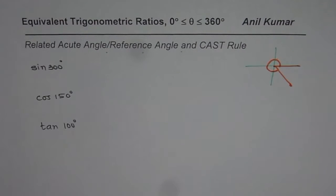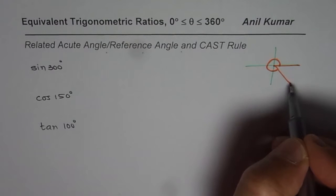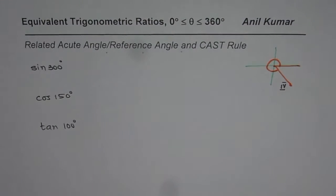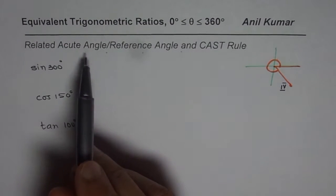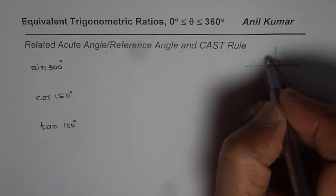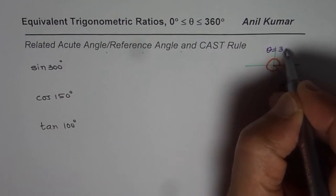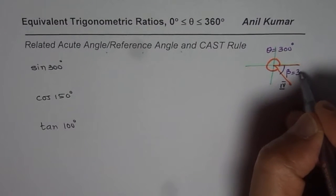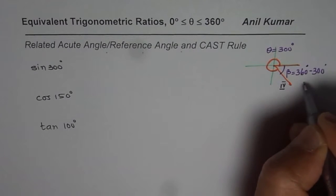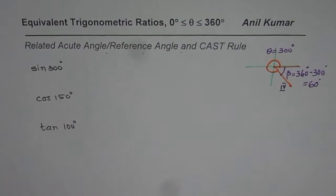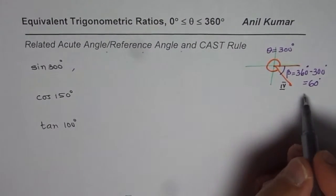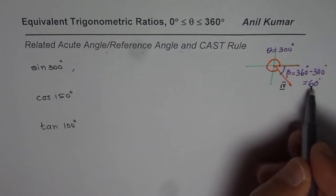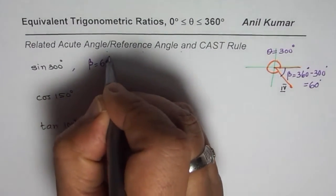As you can see, we are in quadrant 4. To find equivalent trigonometric ratios we need two things: the related acute angle and the CAST rule. Here, if theta equals 300 degrees, then the related acute angle beta equals 360 minus 300, which is 60 degrees. So the related acute angle beta is 60 degrees.